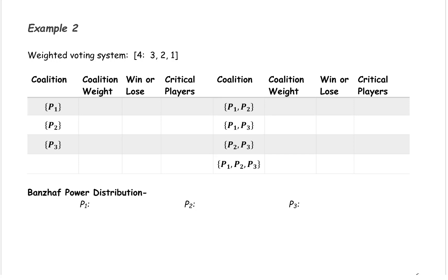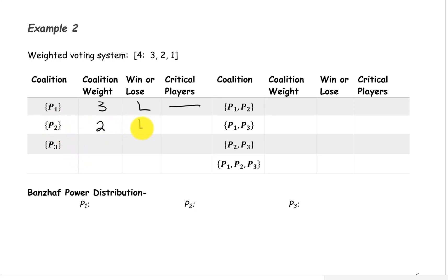The coalition containing only player 1 has a weight of 3 — this is a losing coalition, so we don't need to worry about critical players. The coalition containing only player 2 has a weight of 2, also a losing coalition. The coalition containing only player 3 has a weight of 1, also a losing coalition, so no need to worry about critical players in any of these.